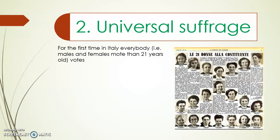Universal suffrage. For the first time in Italy, everybody — males and females over 21 years old — would have a vote. The vote of women was quite discussed. There were fears that women could vote in favor of the monarchy, or that they would simply vote however their husbands told them. That, of course, didn't happen at that time, and it never happened afterwards.